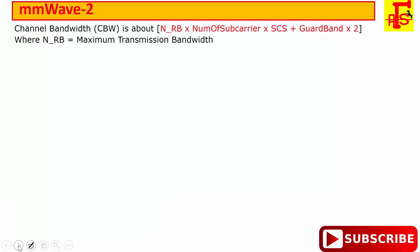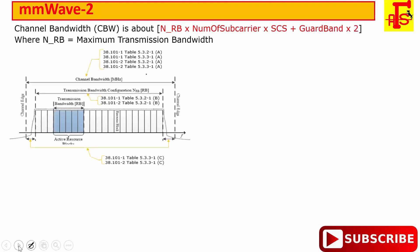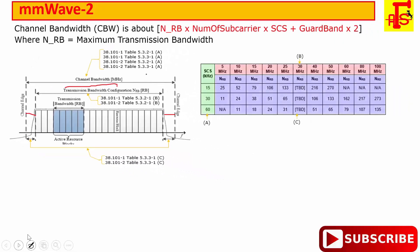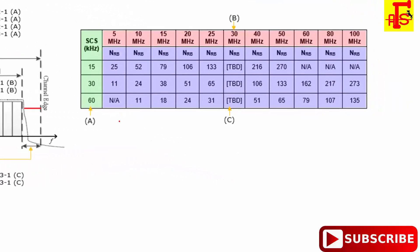When talking about channel bandwidth, it is calculated on the basis of number of resource blocks, number of subcarriers, subcarrier spacing, and guard band. For example, 60 MHz is divided into parts: some part is for the transmission bandwidth where all data is transmitted, and some part is used as a guard band. In LTE, for 20 MHz the total number of resource blocks is 100.